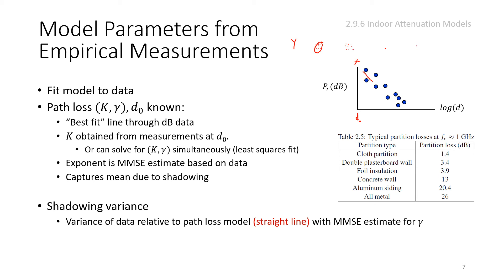We can find shadowing variance of data relative to the path loss model straight line, shown in red with minimum square error for gamma. Typically at 1 GHz, these are parameters you expect for gamma. Once you come up with this, you have your model. In the desert in Saudi Arabia, you can have different parameters. For oil and gas wireless applications, you might need your own model to understand the impact of sand dunes.